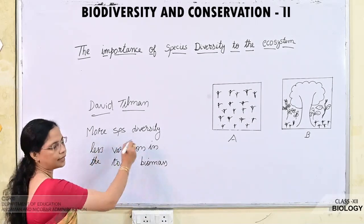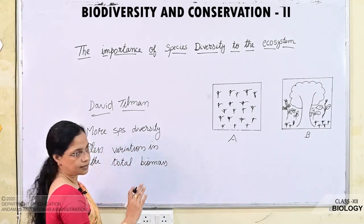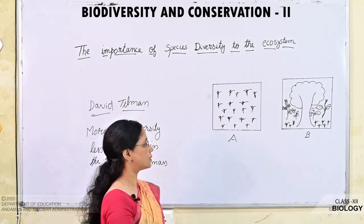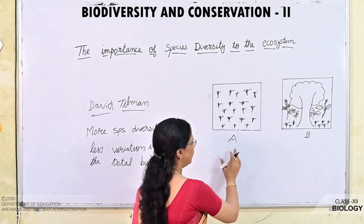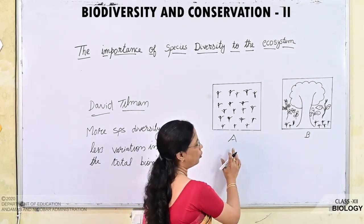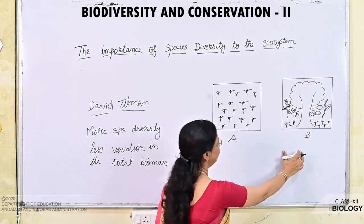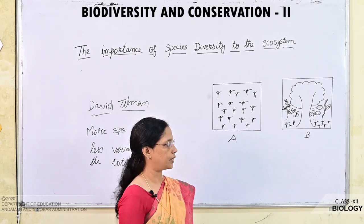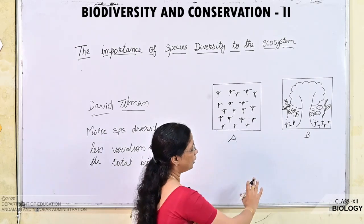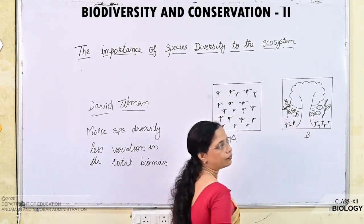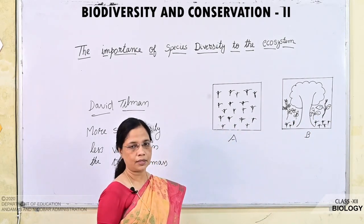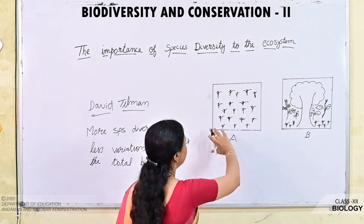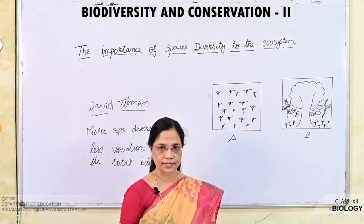Now what exactly does this mean? We will try to understand with this diagram. Here two plots are shown — plot A and plot B. In plot A you can see only one species, a grass variety. In plot B there is a diversity of species. Due to climatic change, what happened? The entire grass in plot A wilts.